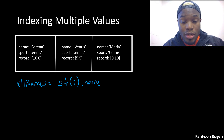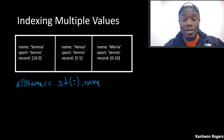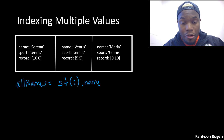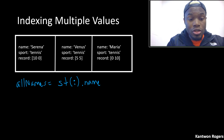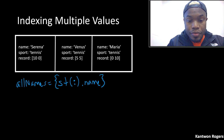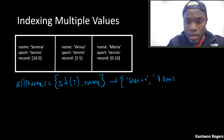So instead, if I want all of my names I need to put them inside some sort of data structure to hold my data. Since I know they're all chars inside my names, it would be beneficial to put them all inside a cell array. All I have to do is wrap that in curly braces. This produces a cell array where the first one is Serena, the second is Venus, and the last is Maria.